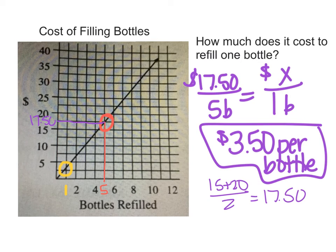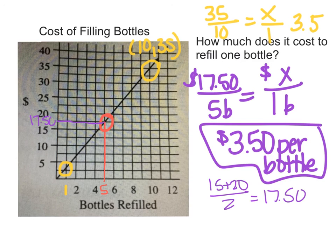I do want to point out one other thing, that there was another point we could have used on here to help us. If I kept looking up my graph, I would see one more point that goes through a nice lattice point, and that is at 10, 35. So I could have used that one at the beginning as well to say that it's $35 for 10 bottles. How much is it for one bottle? And if you did that, you would have ended up with the same answer of 3.5 or $3.50 per bottle.